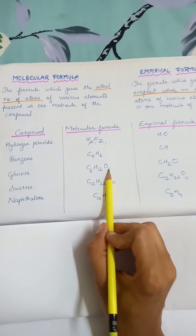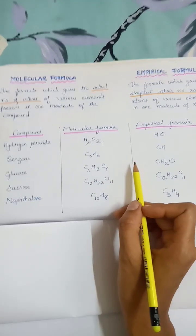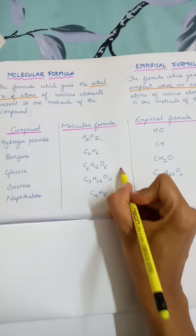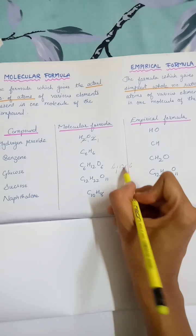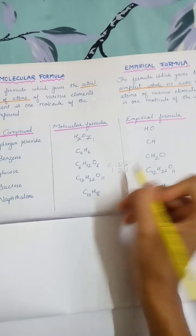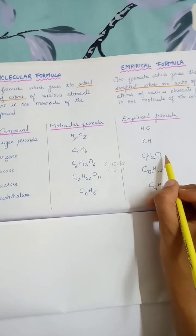Glucose C6H12O6. So when you take the ratio, that is 6 is to 12 is to 6. So that will become 1 is to 2 is to 1. So C1H2O.